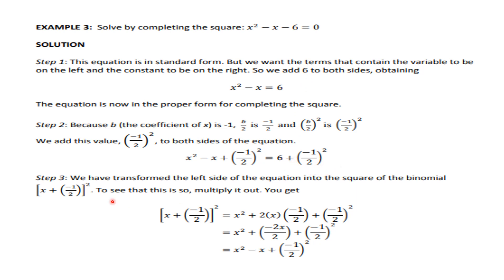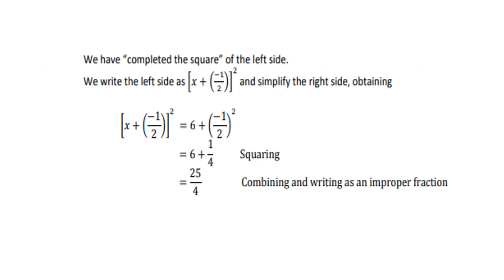In step number 3, we transform the left side of the equation into the square of a binomial term: (x plus minus 1/2) whole square — meaning x squared minus x plus (minus 1/2) whole square equals (x plus minus 1/2) whole square. By completing the square on the left side, you will have (x minus 1/2) whole square equals 6 plus 1/4, which equals 25/4.